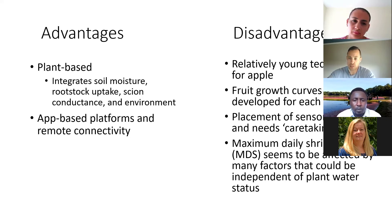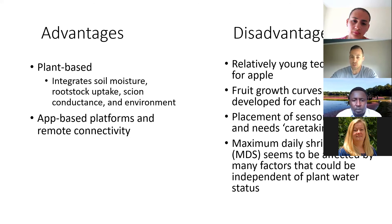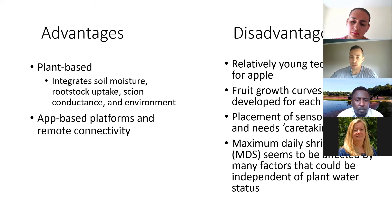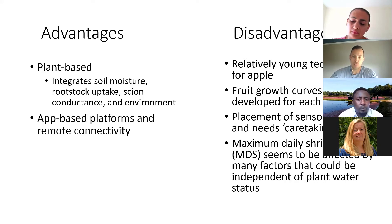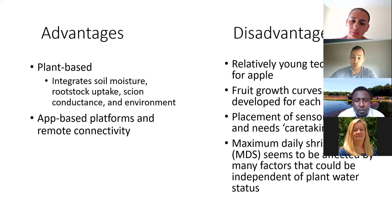One of the biggest challenges is the placement of sensors. It's critical where you place the sensors and what fruit or trees you select — they need to be as representative of that orchard as possible. This is a common theme for all sensors, not just dendrometers: sensor placement is critical when trying to make irrigation or management decisions. The MDS or maximum daily shrinkage seems to be affected by many different factors that could be independent of plant water status, so those other factors need to be accounted for as well.